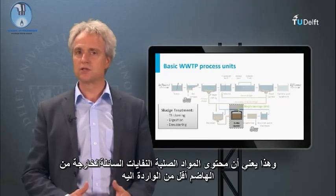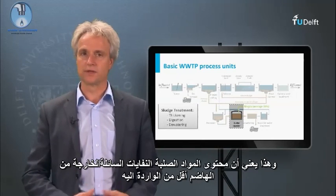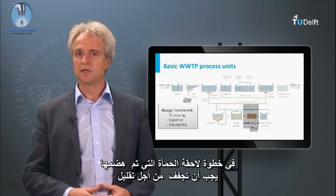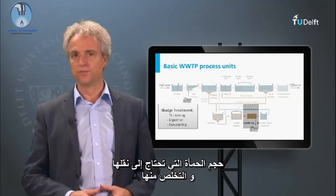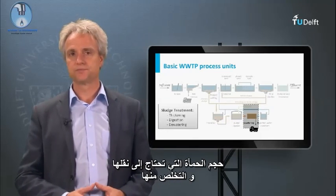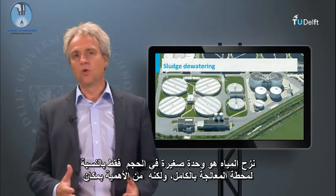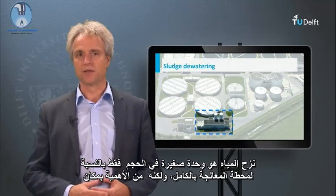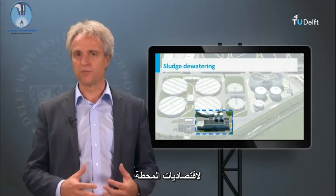This means that the effluent solids content of the digester is less than the influent. In the subsequent step, the digested sludge needs to be dewatered in order to reduce the sludge volume that needs to be transported and disposed of. The dewatering unit is only a small unit in the entire treatment plant, but it is crucial for the economics of the plant.